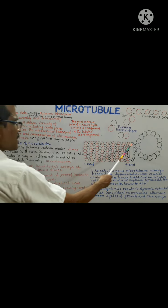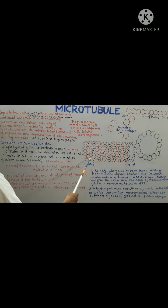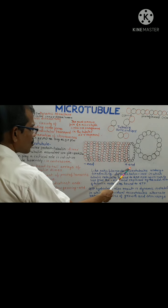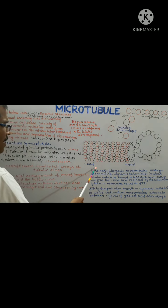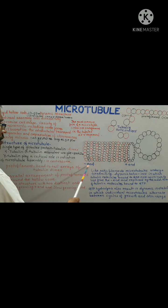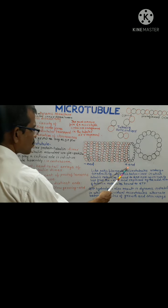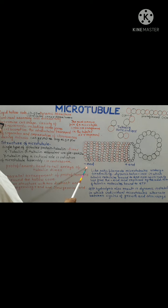Microtubules are polar structures — they have two distinct ends. One end is known as the plus end and the other is known as the minus end. The plus end is fast growing and the minus end is slow growing.